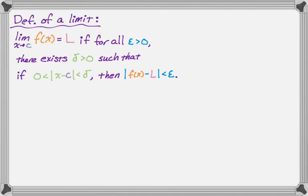We're going to do a bunch of proofs. One key point is that the absolute value of x minus c can't be 0 — what's really being stated there is that x is not equal to c. Because if x was equal to c, we would get 0. So we're not actually concerned with x equals c; it's the limit as x approaches c, which is kind of a big deal.